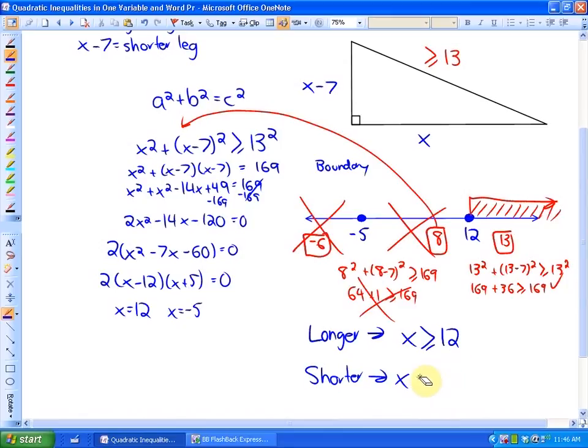The shorter leg would be that 12 minus 7. So in this particular case, 12 minus 7 is going to be 5. So the shorter leg has to be greater than or equal to 5.